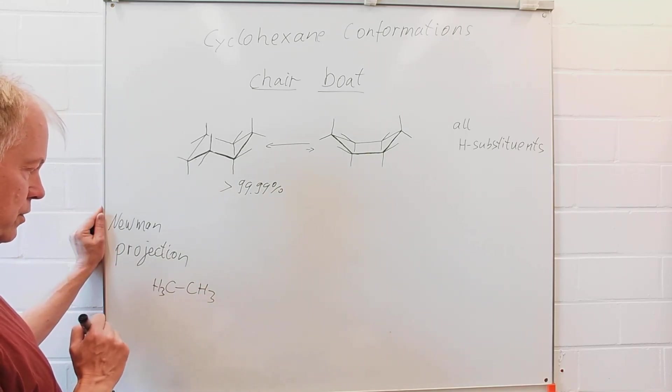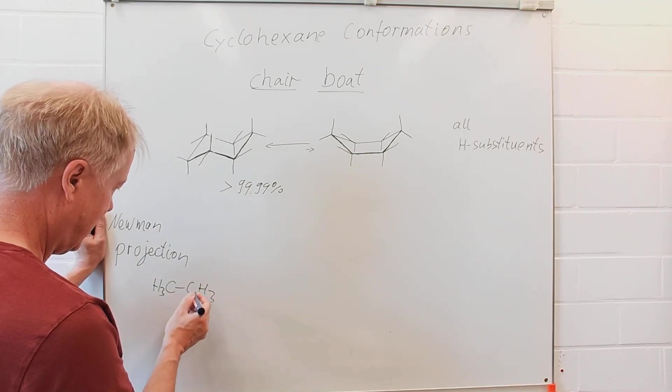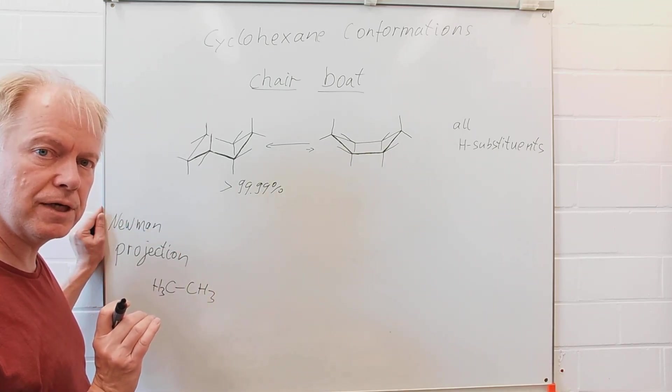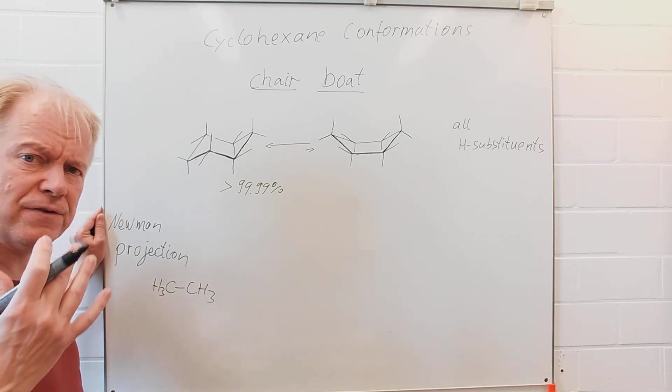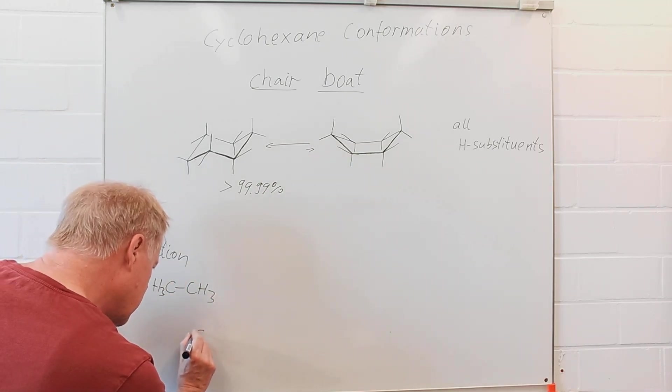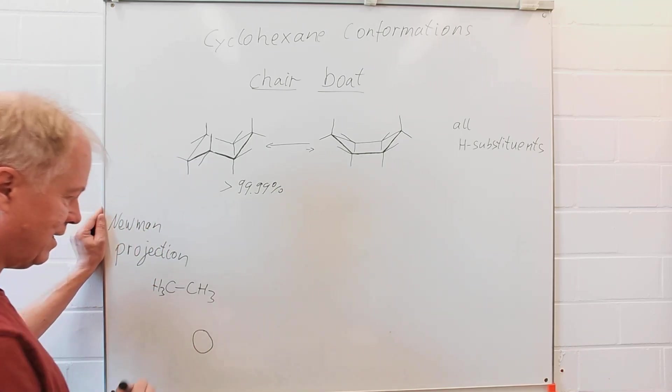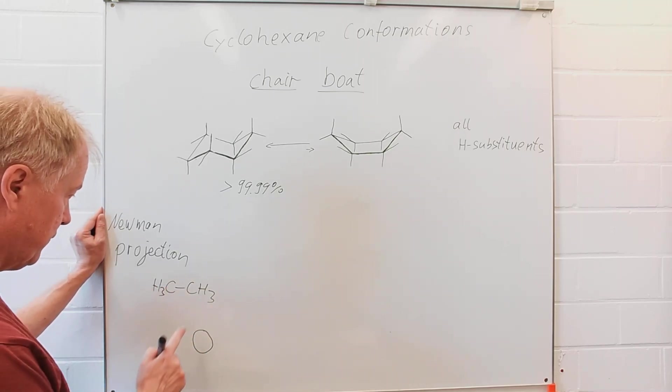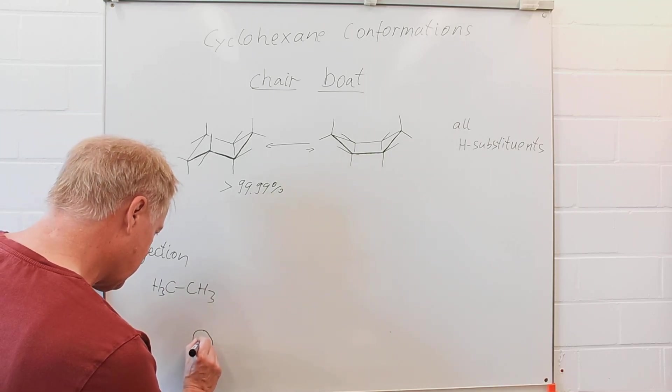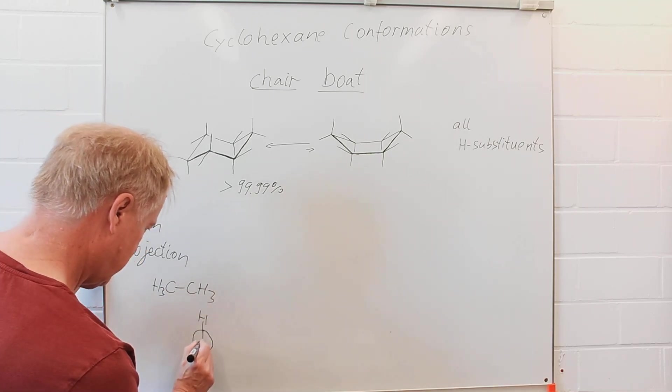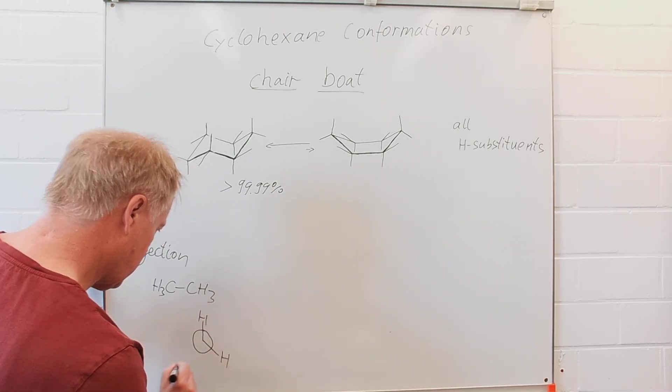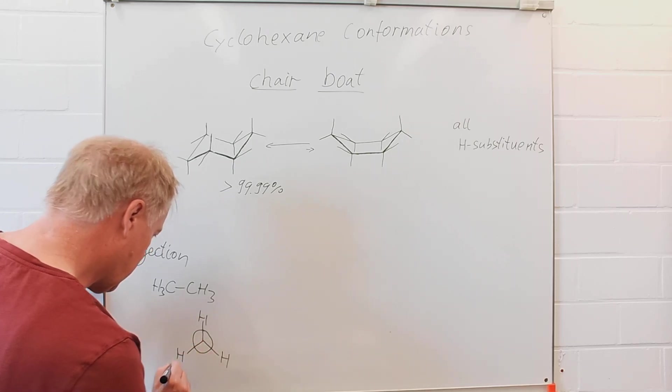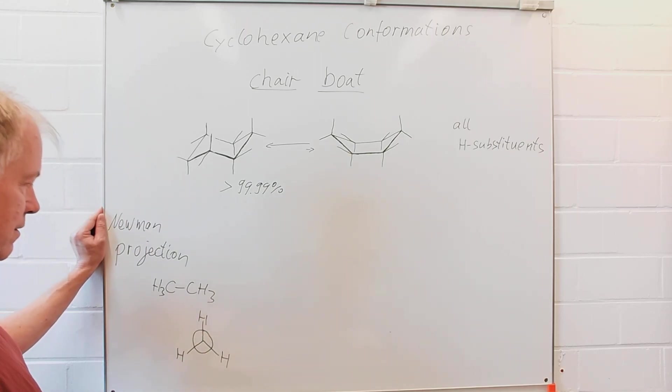For the Newman projection, we have a look at this CC bond having one of the two carbon atoms in front. And we then imagine that we see this as the carbon atom and the second carbon atom is behind the first one and we would notice that we have three hydrogens connected to that carbon and in the projection this would look like this.